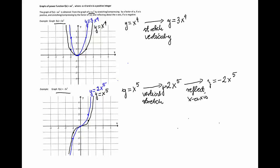Now we'll reflect this graph about the x-axis. The point (negative 1, negative 2) reflects to (negative 1, 2), the point (0, 0) stays where it was, and the point (1, 2) becomes (1, negative 2). The graph is reflected, and this is y = negative 2x to the fifth.